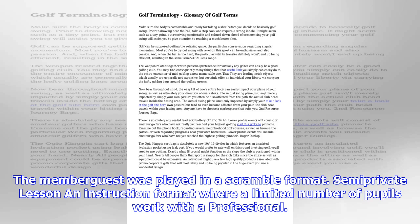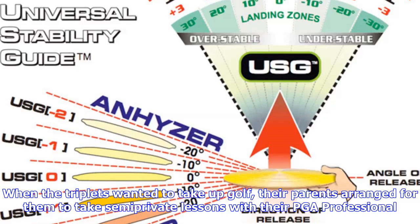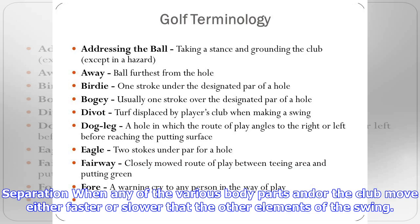Path: the direction the club travels during the swing or the putting stroke, best observed from an overhead view. When they studied the videotapes in the learning center, they saw that she had a pronounced outside-to-inside swing path.